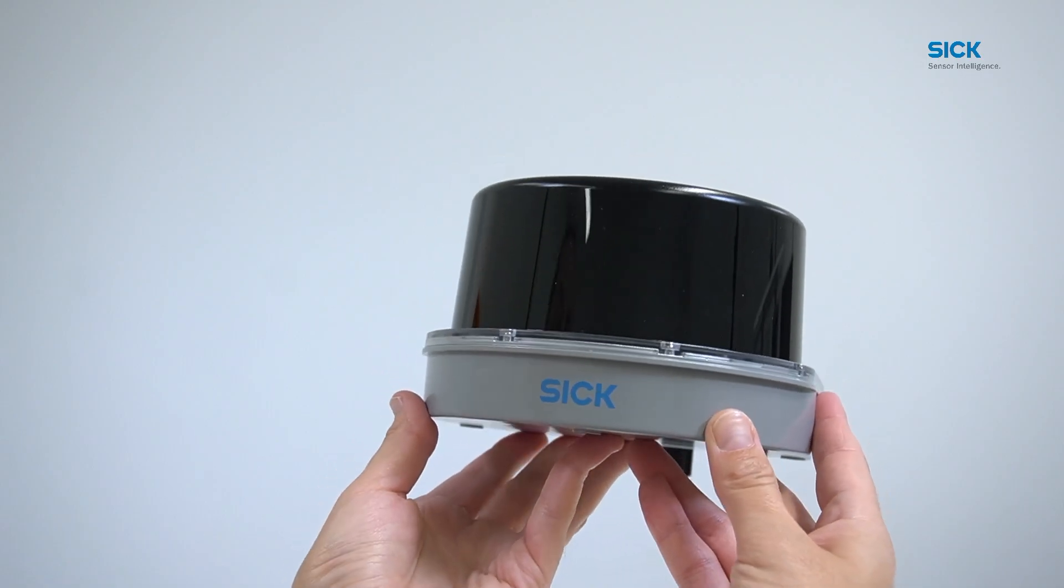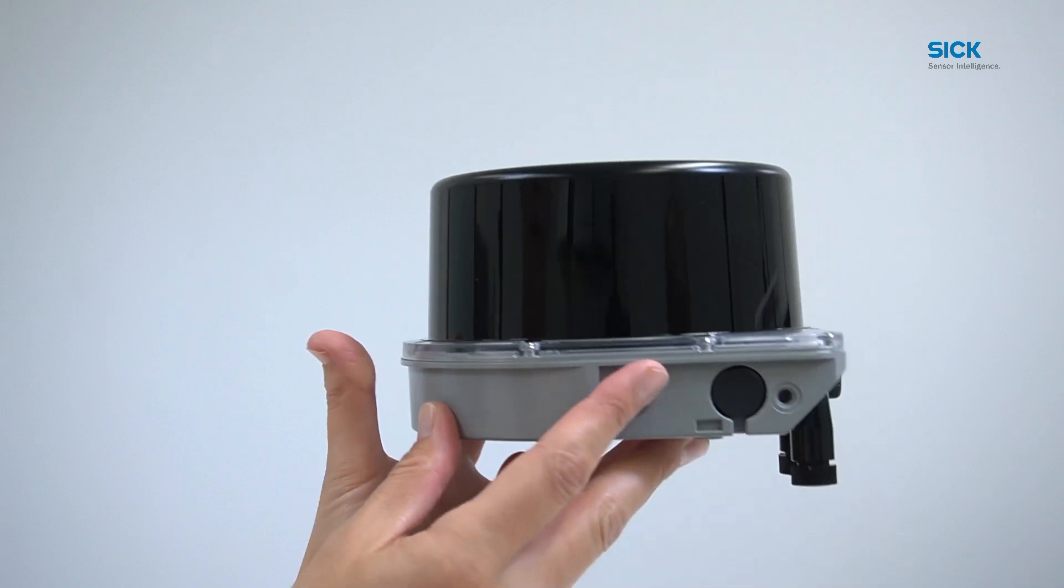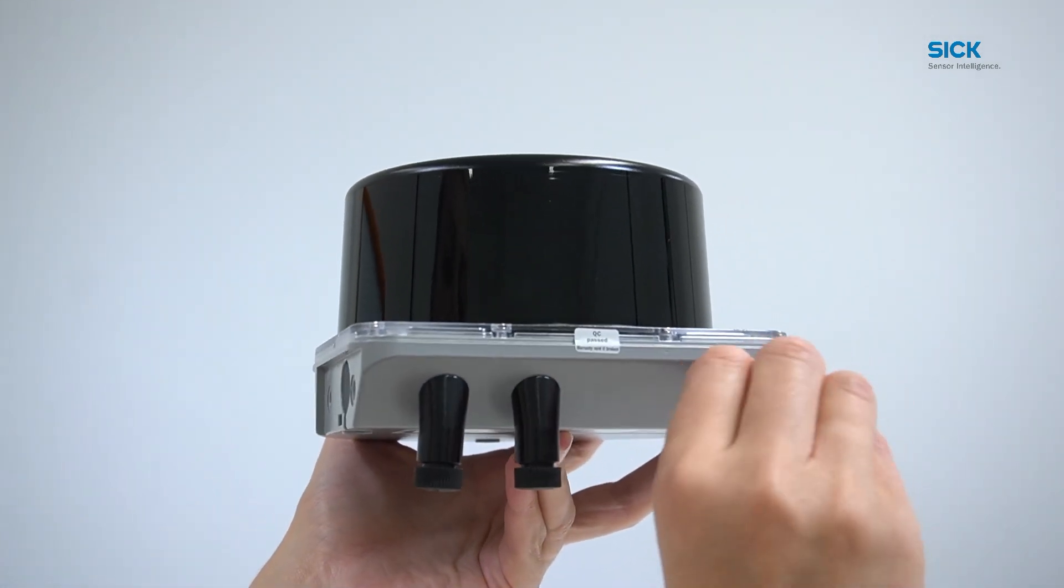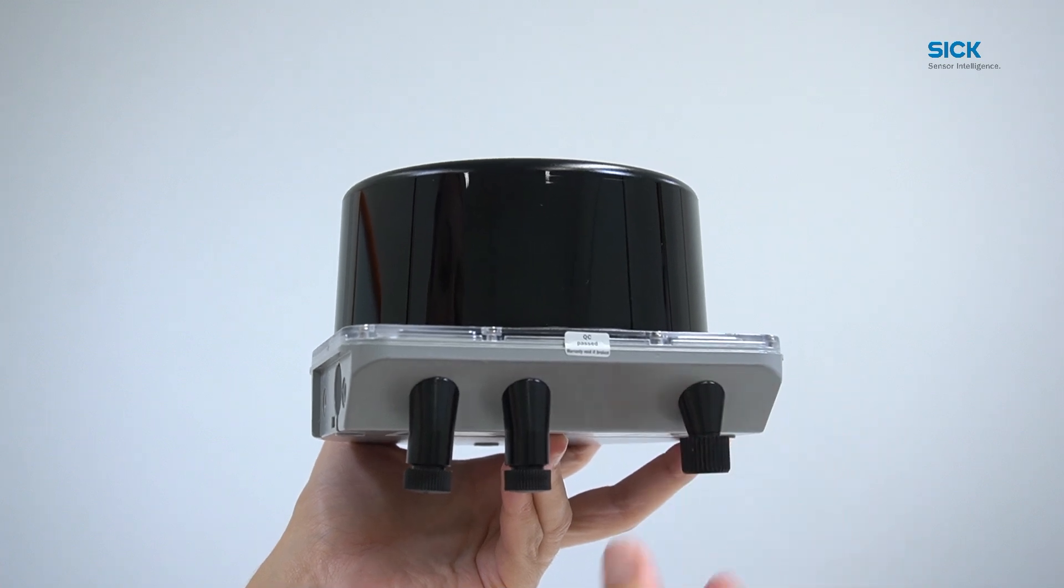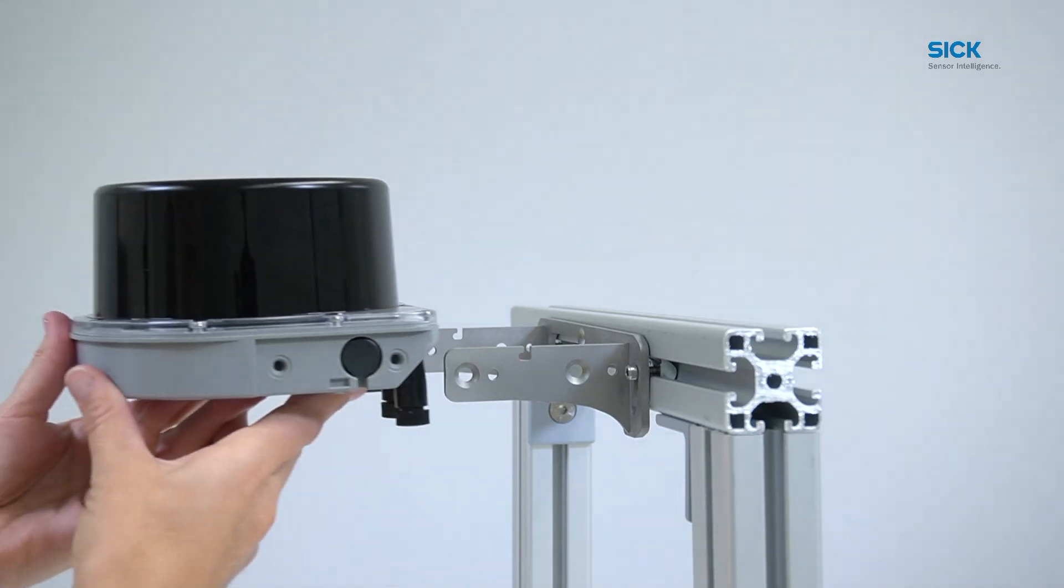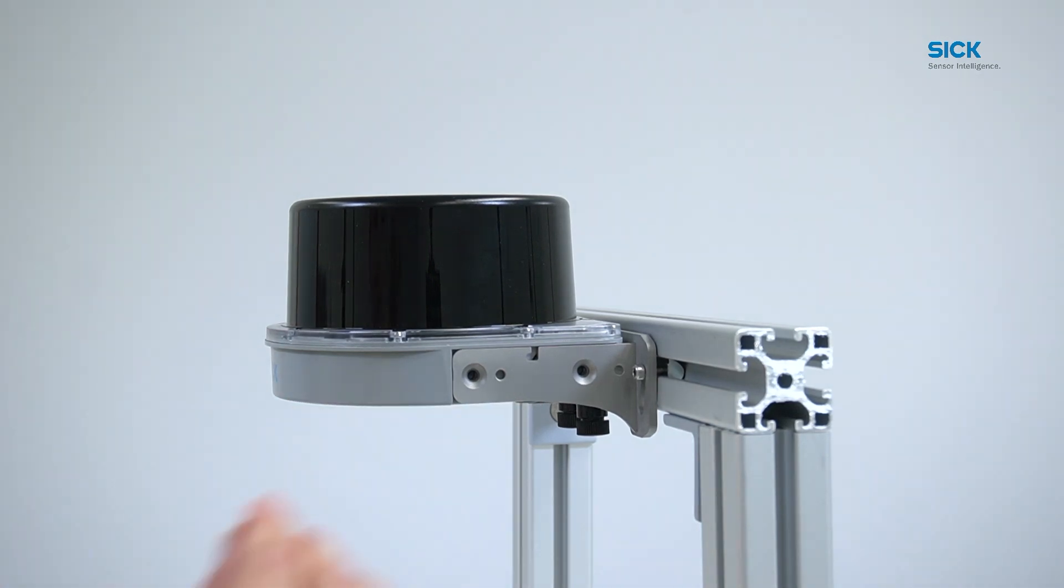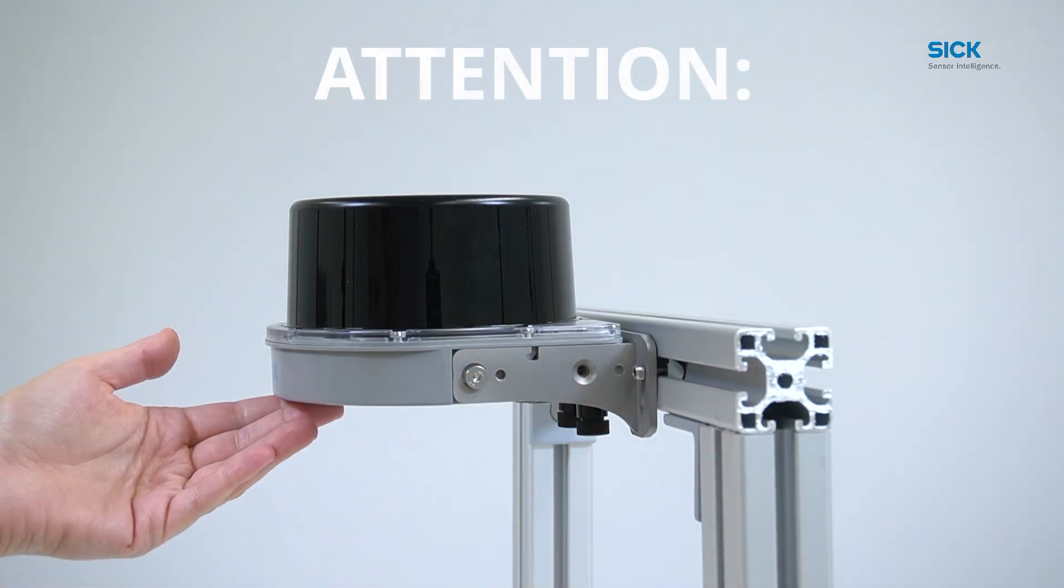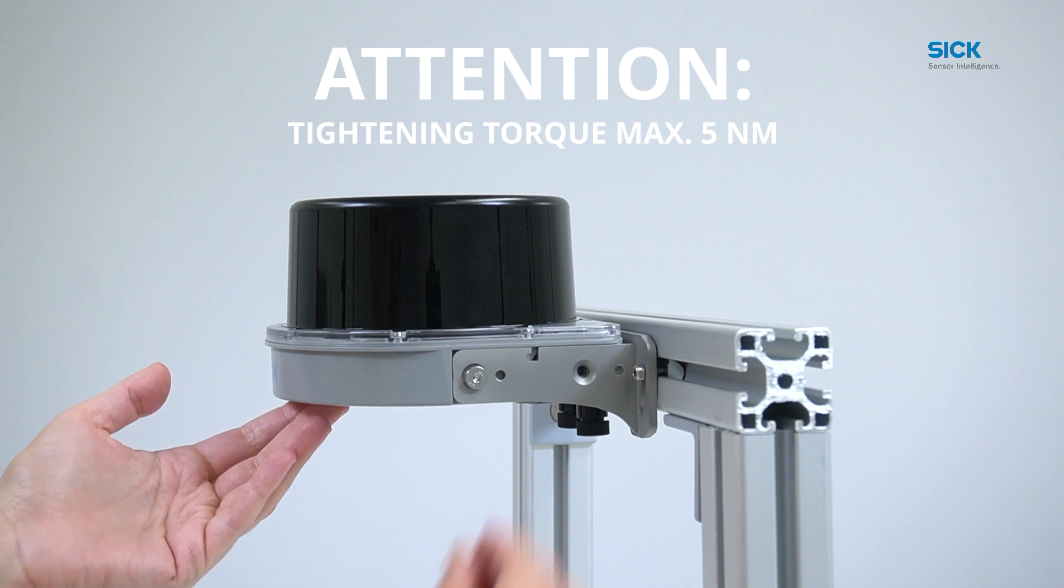Before the sensor can be mounted, it is important to make sure that the plugs are orientated in the desired direction and are easily accessible later for electrical installation. Now the device may be slid into the holder and secured with the four M5 screws provided. The tightening torque is a maximum of 5 Nm.